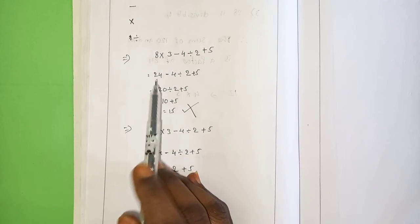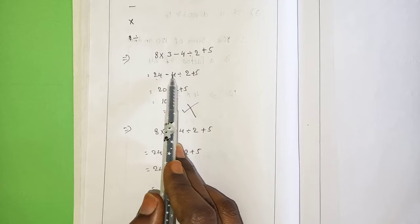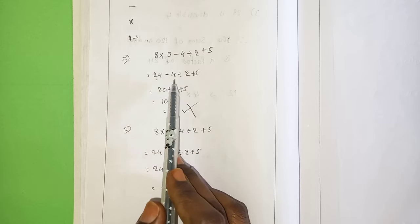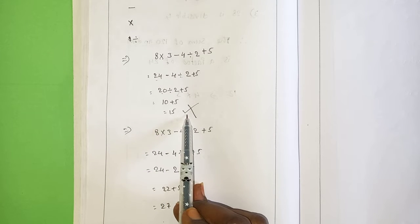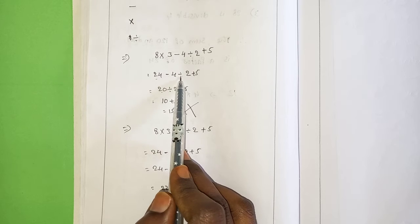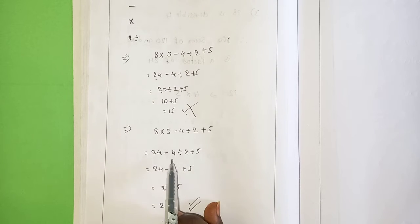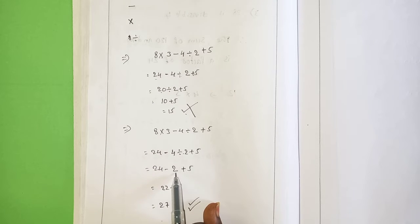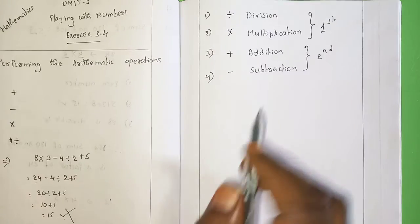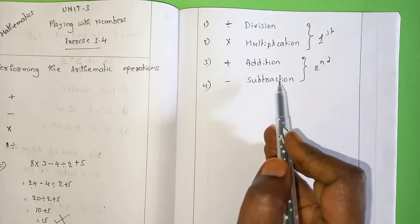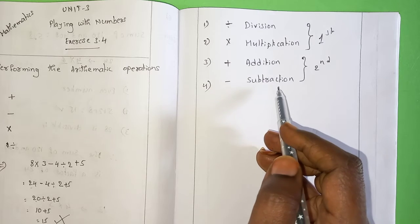In the problem, I did 24 minus 4 first — that is the reason I got the wrong answer. Division has the highest priority, so 4 divided by 2 equals 2, giving the correct answer. That is the reason you have to do division and multiplication first, and then you can do addition and subtraction.